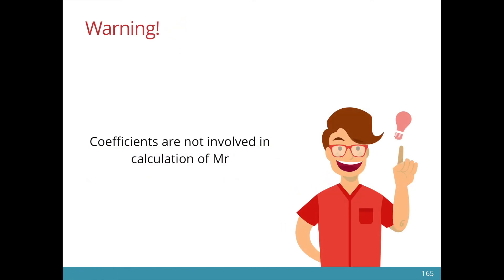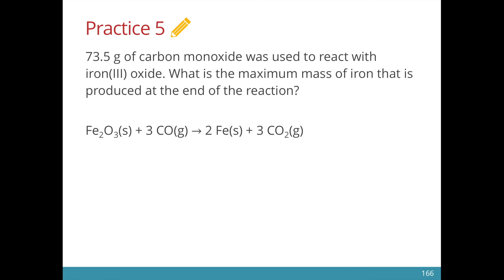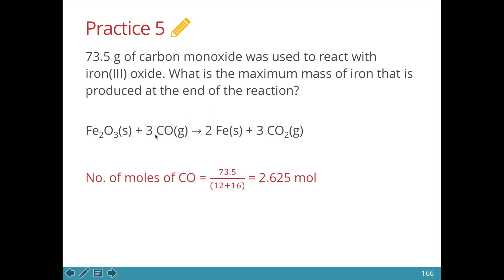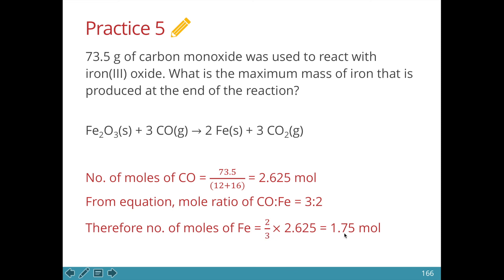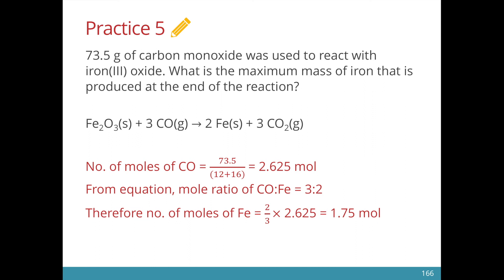To reiterate: the coefficients — we do not include them in the calculation of your Mr. One last question. The equation is provided. We are given the mass of CO, so in order to cross over we need to convert the mass into the number of moles. Find the number of moles of CO. We find that this is a 3 is to 2 ratio — so 3 units give 2 units. If I have 2.625 moles, I take two-thirds of it, which is 1.75 moles. We are asked for the mass of iron, so we take the number of moles times the molar mass, which is the Ar of 56, to get 98 grams. Remember the units.